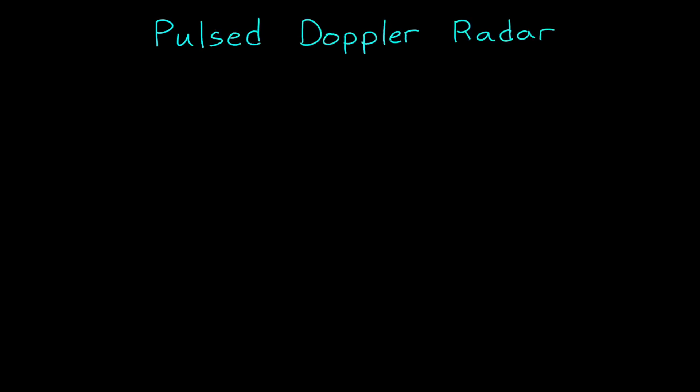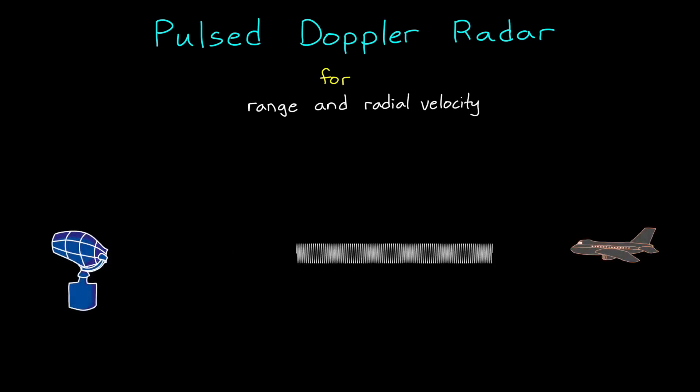In this video, we're going to introduce pulsed Doppler radar, and specifically I want to talk about how to determine range and radial velocity using a series of radar pulses.